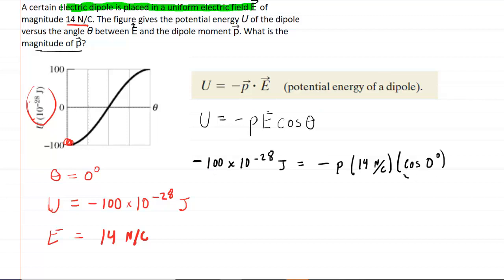Now, we know that the cosine of 0 degrees is just equal to 1, so this term essentially can be omitted. To solve for P, which is the magnitude of the dipole moment, we can divide both sides of this equation by negative 14 newtons per coulomb. And when we work that out on our calculators, we'll get roughly 7.14 times 10 to the negative 28th.